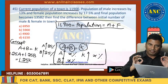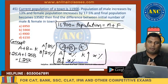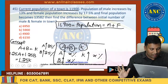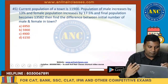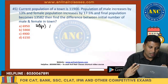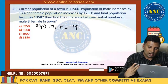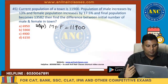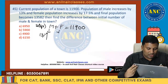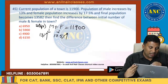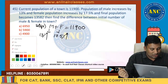Instead of A it is male, instead of B it is female. Listen carefully — step by step. Step 1: Male plus female equals 11,900. Population of male increases by 13%, population of female increases by 17.5%.